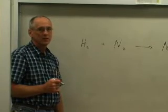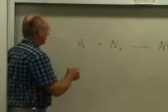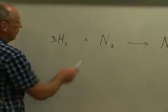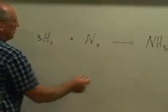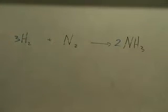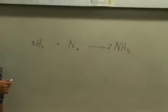We balanced the equation for the formation of ammonia by seeing that we required three hydrogen molecules with one nitrogen molecule to make a total of two ammonia molecules. That leaves you with two nitrogen atoms on each side of the arrow and six hydrogen atoms on each side of the arrow. The equation is balanced.